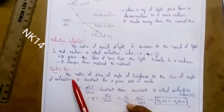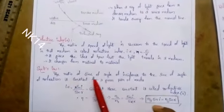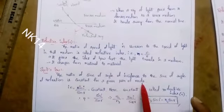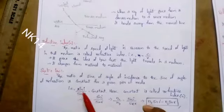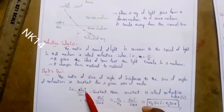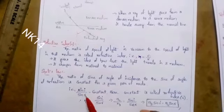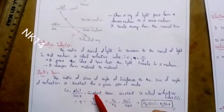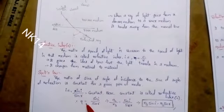Next is Snell's law, which is an important law. The ratio of the sine of the angle of incidence to the sine of the angle of refraction is constant for a given pair of media. So Snell's law states: sin i / sin r = constant, and that constant is the refractive index n, so n = sin i / sin r.